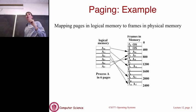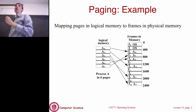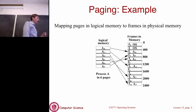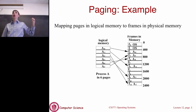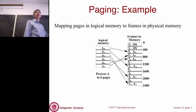This essentially addresses the problem of external fragmentation, because since everything is allocated as pages — they're all fixed size — there can never be any external fragmentation. Because frames are arranged back to back, you can always fit in a page. That's why there's no external fragmentation going on here.